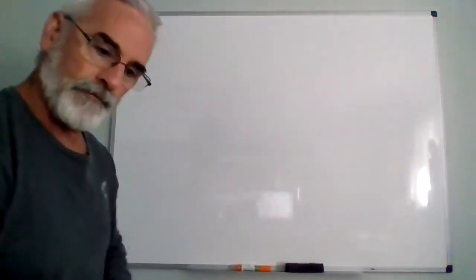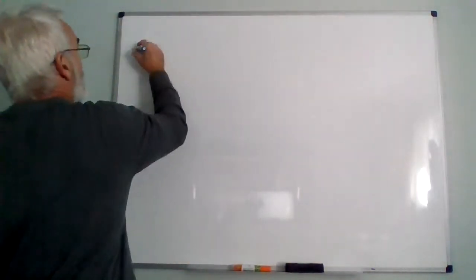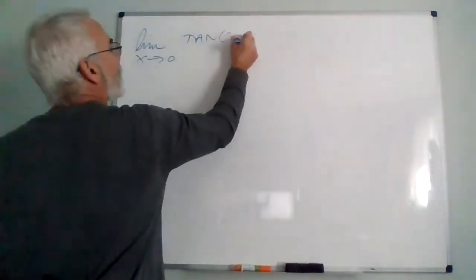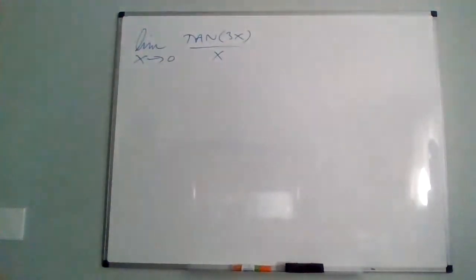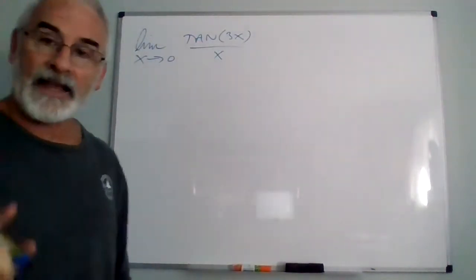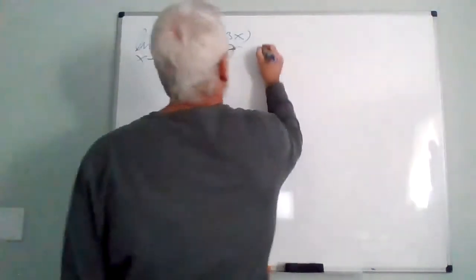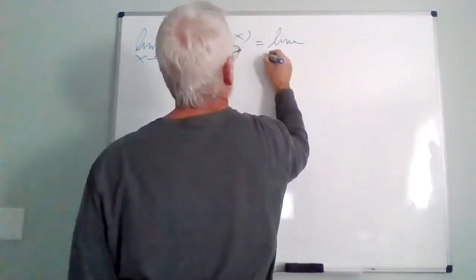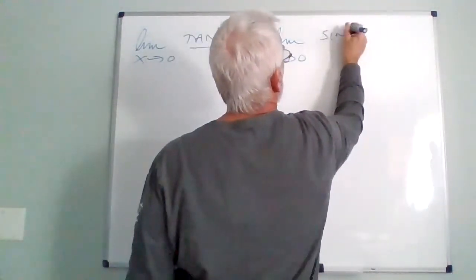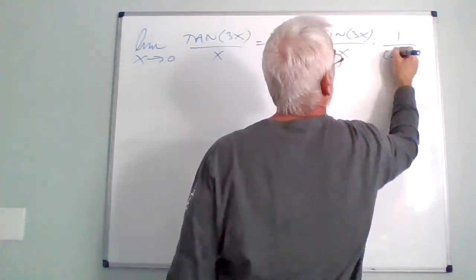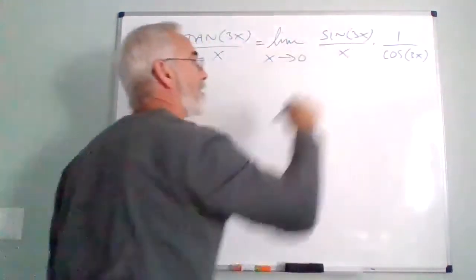The next problem: the limit as x goes to zero of tangent of 3x over x. If that had been sine, we'd do exactly the same thing as the last problem, but this is tangent and we don't have a rule governing tangent. However, we can use the fact that tangent theta equals sine theta over cosine theta. So we restate this as sine of 3x over x times one over cosine of 3x.